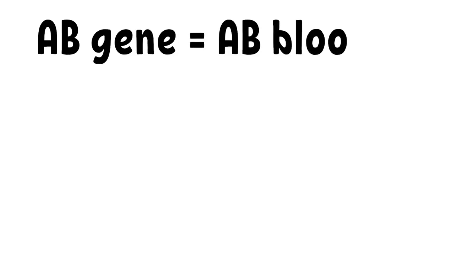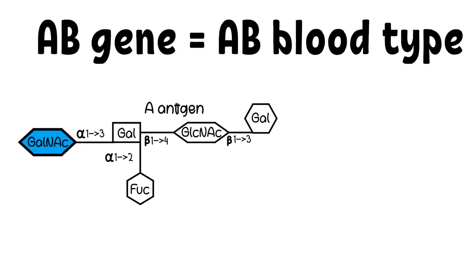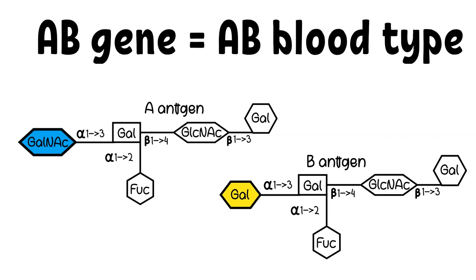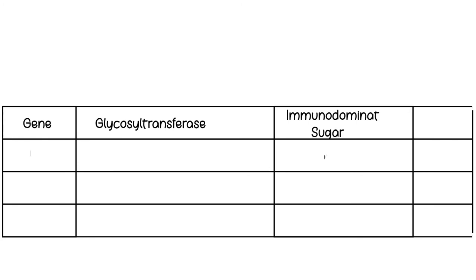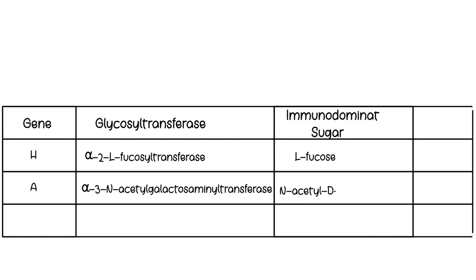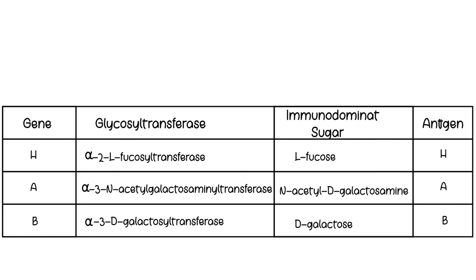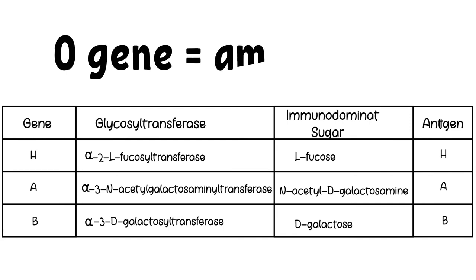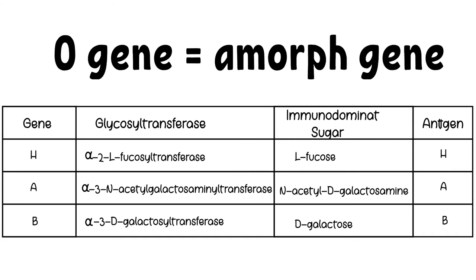For individuals with blood type AB, both A and B antigens are produced. For people with group O blood type, referring back to the table, there is no enzyme responsible for transferring O sugar to H antigen — that is because the O gene is amorph and does not code for any enzyme. So for people with O genes, the antigen on the red blood cell surface is H antigen.